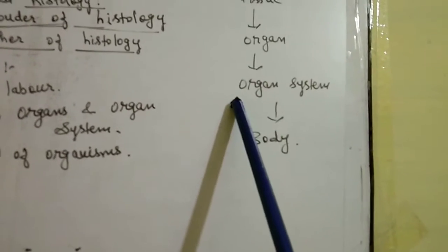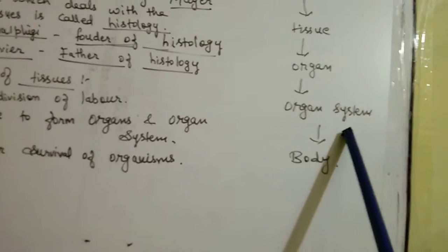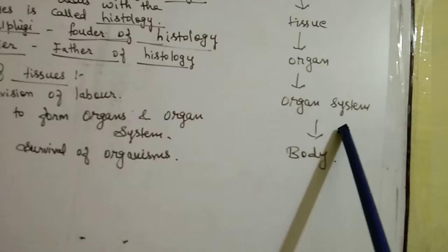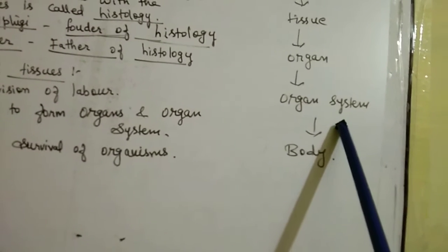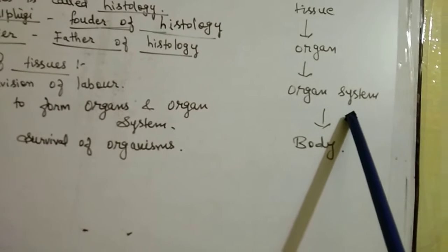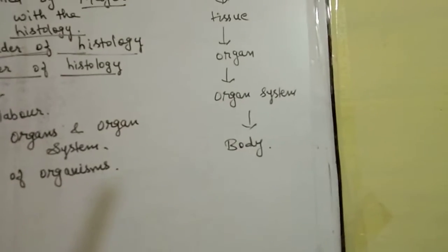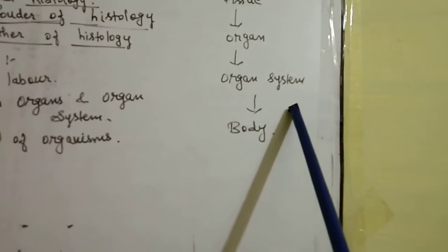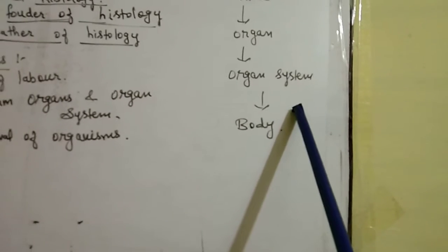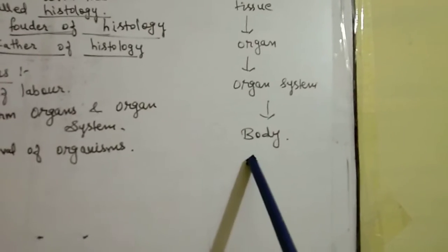Next comes organ system. Tissues form organs, and organs form organ systems. For example, the digestive system is formed by organs such as the stomach, pancreas, small intestine, large intestine, and esophagus. Other organ systems include the digestive system, respiratory system, nervous system, reproductive system, and excretory system. When we combine all these systems, that forms our body — and that is the role of tissue.